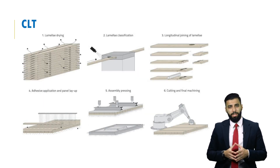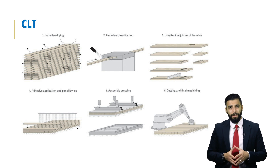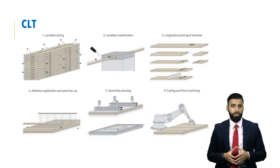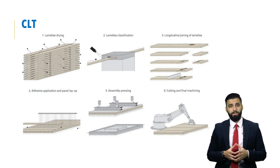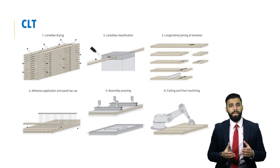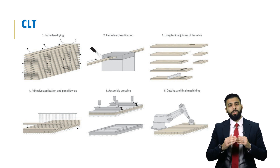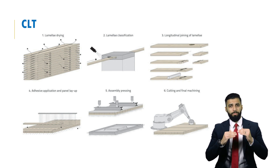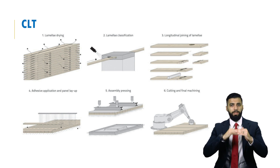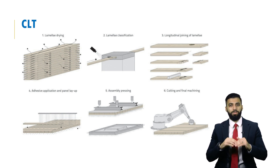Our third engineered timber product is CLT — cross laminated timber. In terms of its production, layers are glued together, often in an odd number of layers: three, five, or even seven. Each layer is made of boards collectively known as lamellae, placed adjacent to one another. The neighbouring layers — those on top of and below a designated layer — are usually glued at a 90-degree angle, so adjacent layers cannot be in the same direction. The layer above and below the reference layer must be at 90 degrees to it.